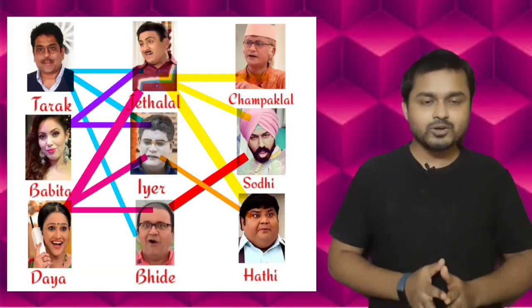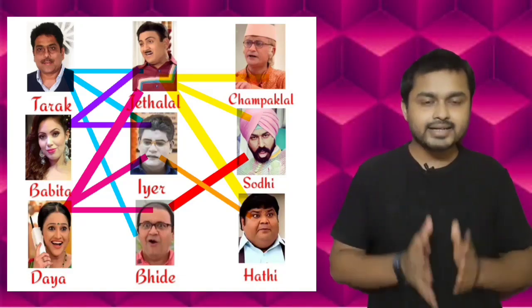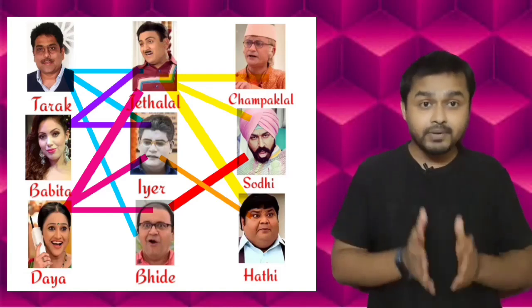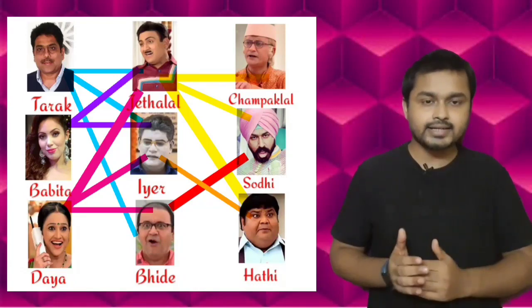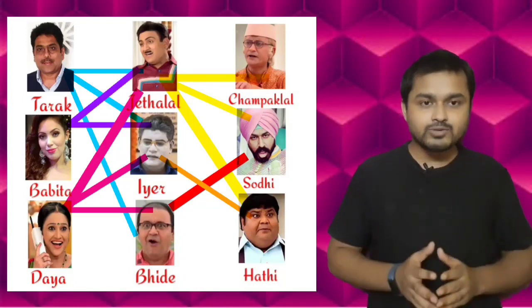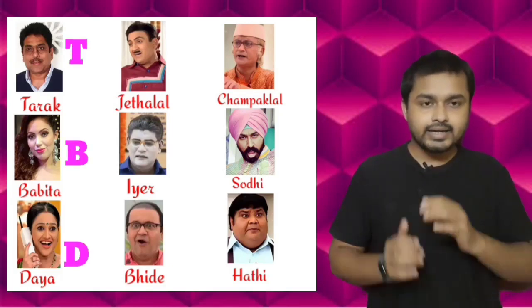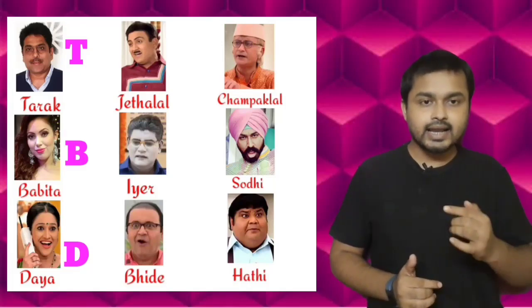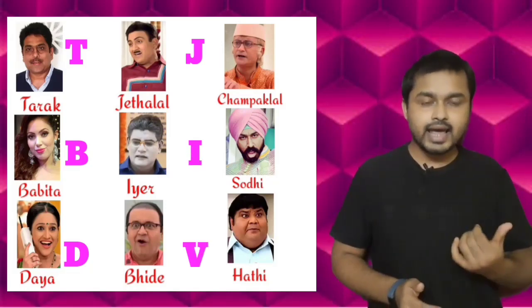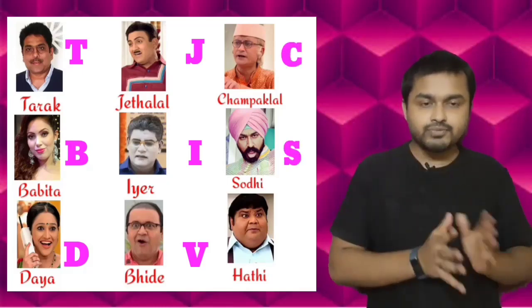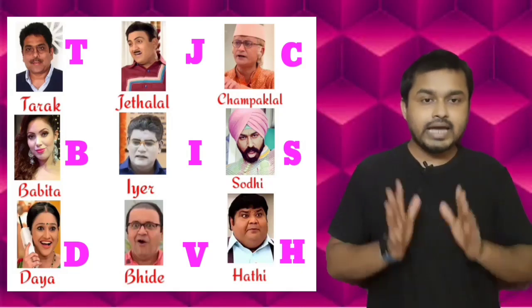These are all the friendships we are considering. We are going to use simple matrix multiplication to find the number of mutual friends of the first three characters with the last three characters. The first three characters — Tarik, Babita, and Daya — are denoted as T, B, and D. The next three — Jethalal, Iyer, and Vire — are J, I, and V. The last three — Champak, Sodhi, and Hathi — are C, S, and H.